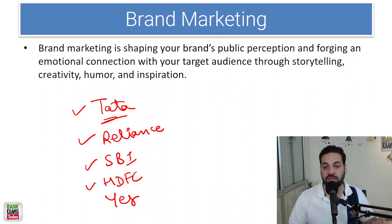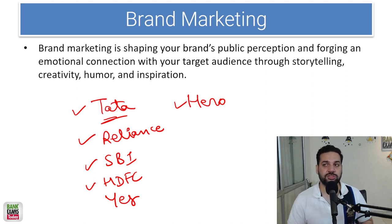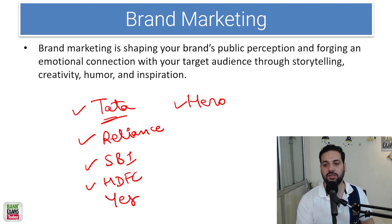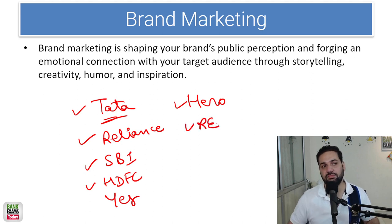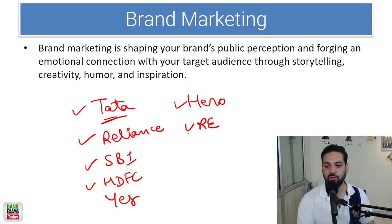There are perceptions about all brands. Hero Motors — low-cost bikes, good quality. Royal Enfield — good quality, costly cruiser bikes. Maruti Suzuki — reliable cars. These perceptions exist in people's minds.